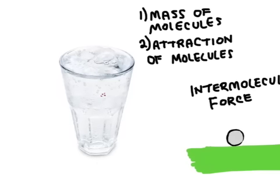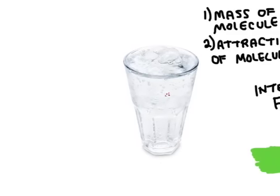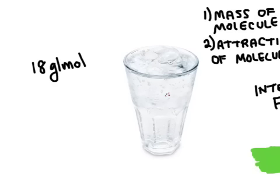Water is pretty weird because it's a liquid at room temperature. There are much heavier molecules that are gases at room temperature. For example, water has a molar mass of 18 grams per mole, which is pretty light. By comparison, oxygen is a very common gas that's twice as heavy as water at 32 grams per mole, and yet oxygen remains a gas.